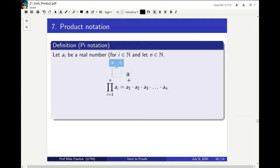So just like sigma notation, we have the end index, we have the start, we have the dummy variable, and we have the general term.